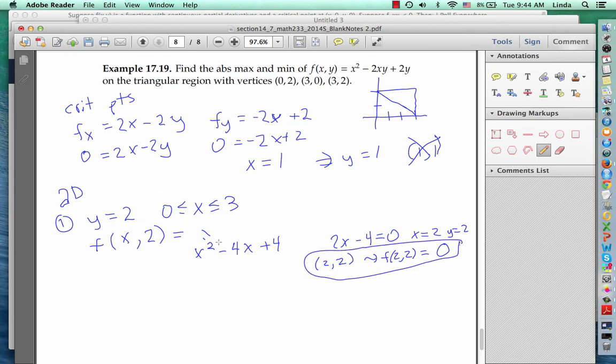Now to find the extreme values here on the interval from x equals 0 to 3, we also want to check the endpoints of that interval. So if we look when x equals 0, and y is still 2, and check f of 0, 2, we get a value of 4. And if we look at the other endpoint at 3, 2, f of 3, 2 is equal to 1. So those are also candidates for our extreme values.